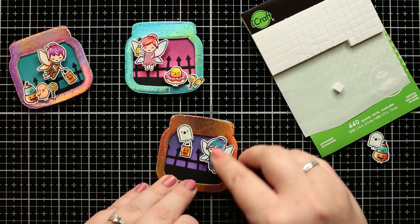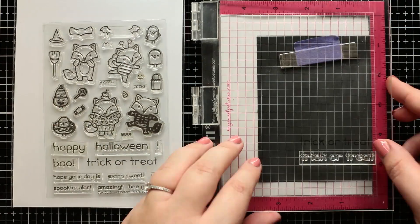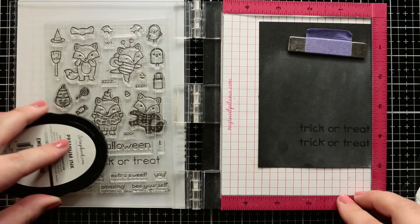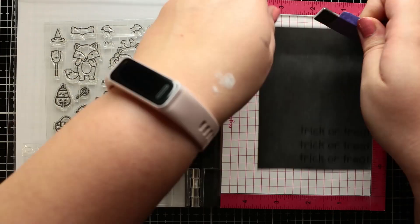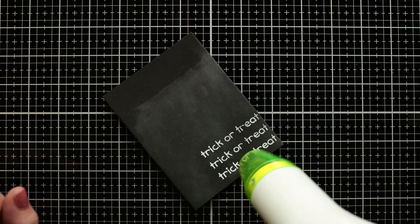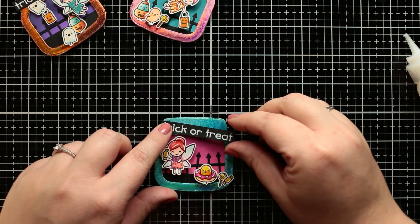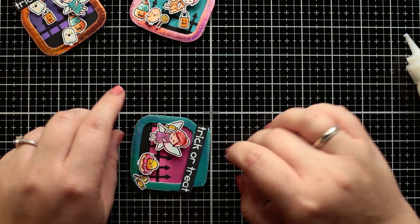When it was done I stamped the sentiment three times with watermark ink to a black cardstock. Applied white embossing powder then heat embossed it. When it was done I added the sentiments to their right place.